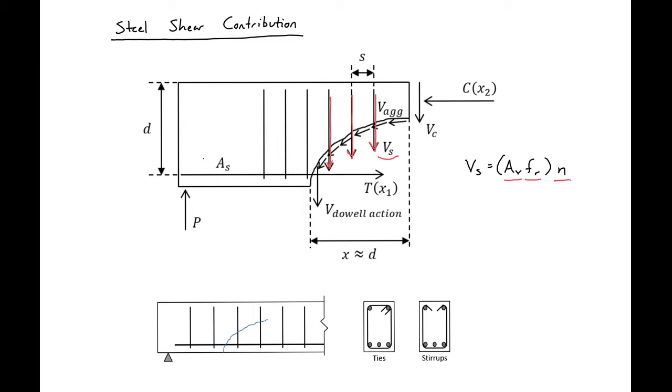We know that our number of bars is equal to this X or D distance, the horizontal distance of our crack. So that's D divided by the spacing of our shear reinforcement S.